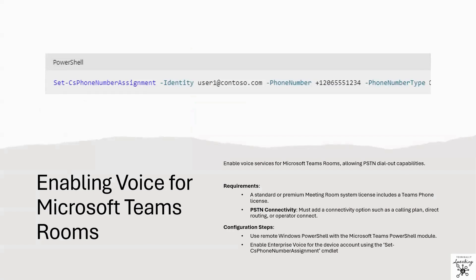As an optional step, after the creation of an MTR device account, complete the following configuration by enabling voice services for that account. If you don't enable voice services, users won't be able to PSTN dial out from an MTR. A standard or premium meeting room system license includes a Teams phone license; however, a PSTN connectivity option will need to be added, such as a calling plan, direct routing, or operator connect. To enable voice services, you can use remote Windows PowerShell with the Teams PowerShell module and enable enterprise voice for the device account using the Set-CsPhoneNumberAssignment command.